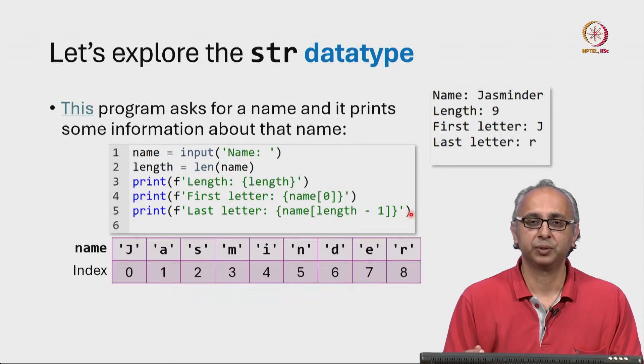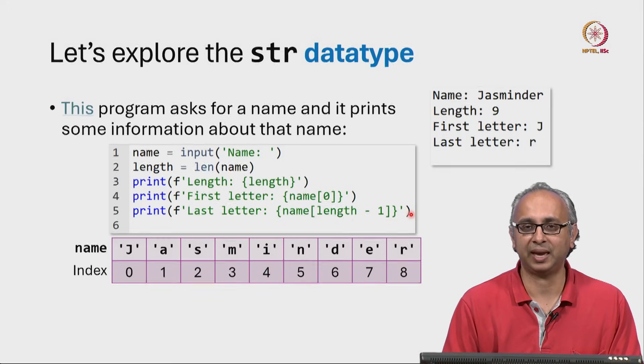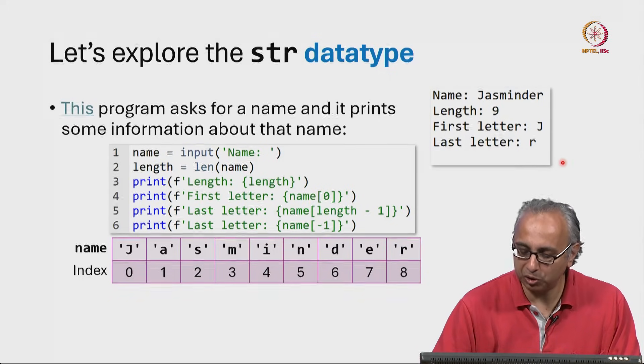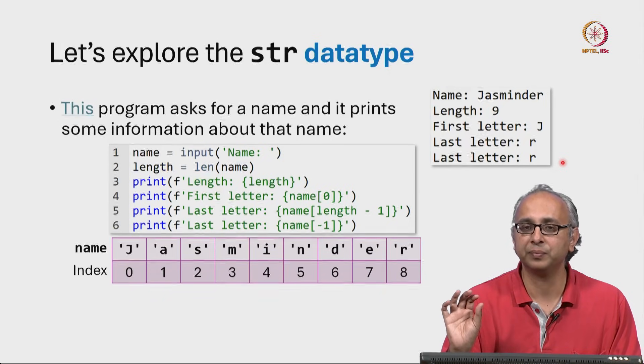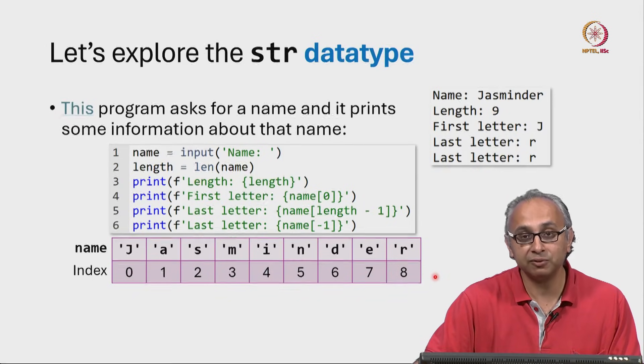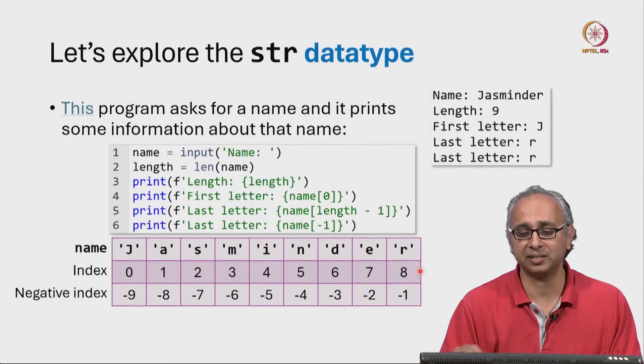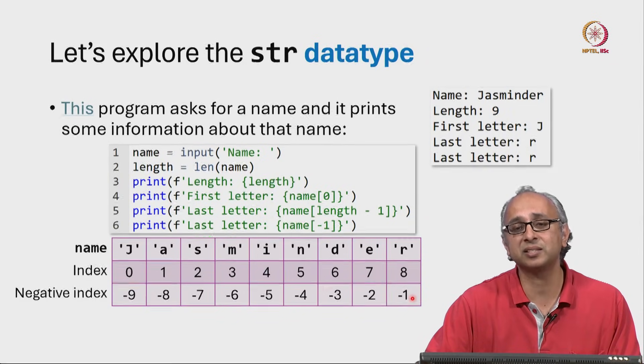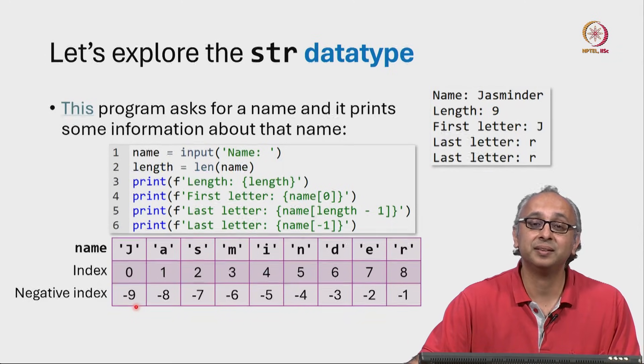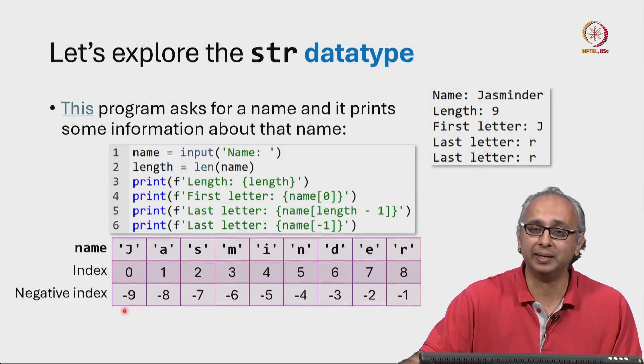But since we often want the last letter in a string, Python gives us an alternate syntax. You can also print name square bracket minus 1 and that will also print the last letter as R. So the way to think about this is in addition to indexing the strings using non-negative index numbers 0 to length minus 1, Python also allows negative indexing where the last item in the string is at index minus 1. The second last is at index minus 2 all the way up to in this case minus 9, because we are counting from minus 1 and the string has length 9.